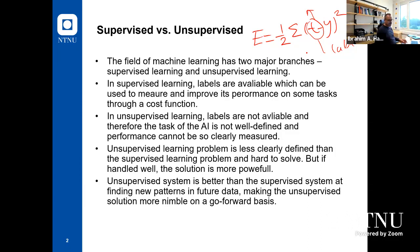Also, in your email, when you get spam and mark it as spam, it goes to the spam folder and you won't get those emails later. You teach the machine — it will classify similar emails as spam. An unsupervised system is better at finding new patterns in future data, making the solution more nimble. A machine built with unsupervised learning should be smarter.